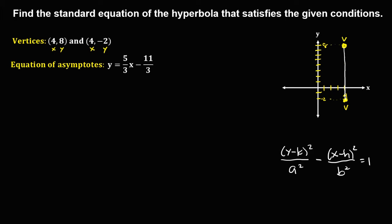This is the formula we're going to use to find the standard equation of this hyperbola. First, we need to find the center. Since the center is the midpoint of the vertices, we find the distance between the two vertices. The distance is 10, and dividing by 2 gives us 5.